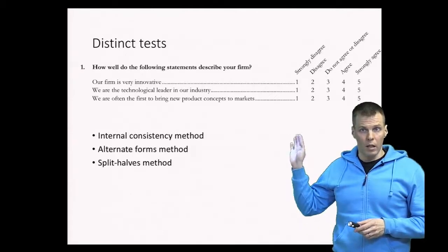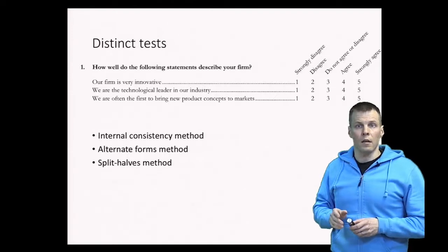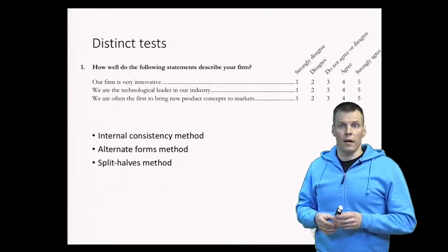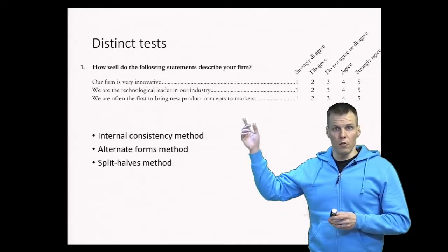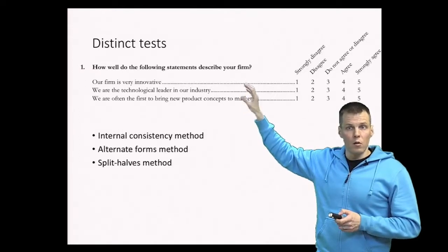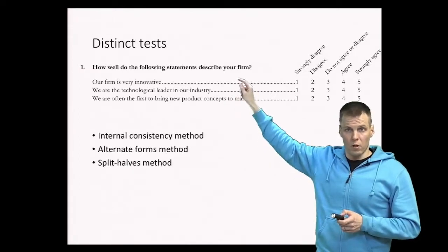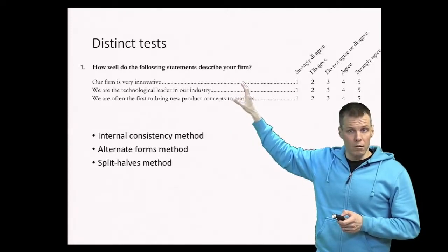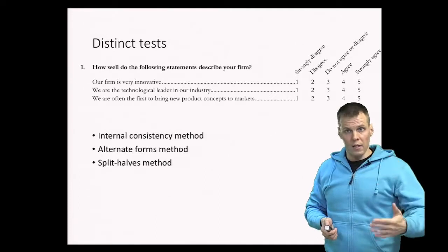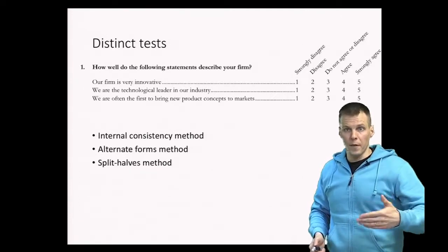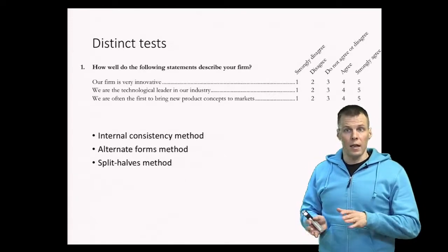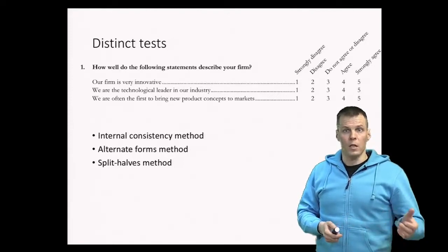The reason for having multiple survey questions that look like they measure the same thing is that we actually treat them as distinct tests. That is the most common reason for using multiple survey questions to measure the same construct. For example, we could ask whether the company is innovative, whether they are the technological leaders in the industry, and whether they are the first to bring new product concepts to market. These are distinct questions — you don't answer the second question similarly to the first — but they do measure the same trait. Different ways of using data from multiple distinct tests produce different methods for assessing reliability.